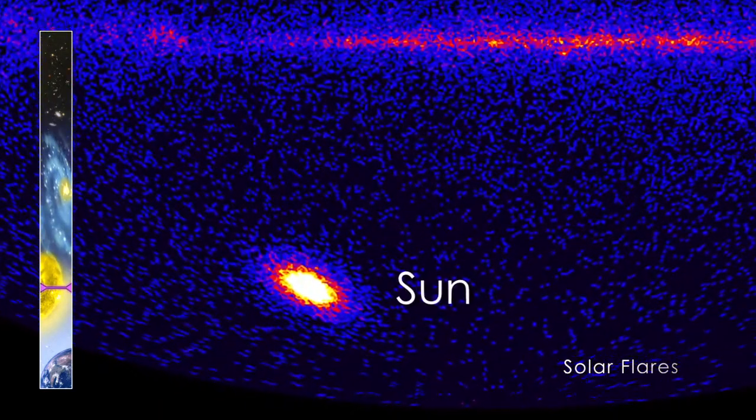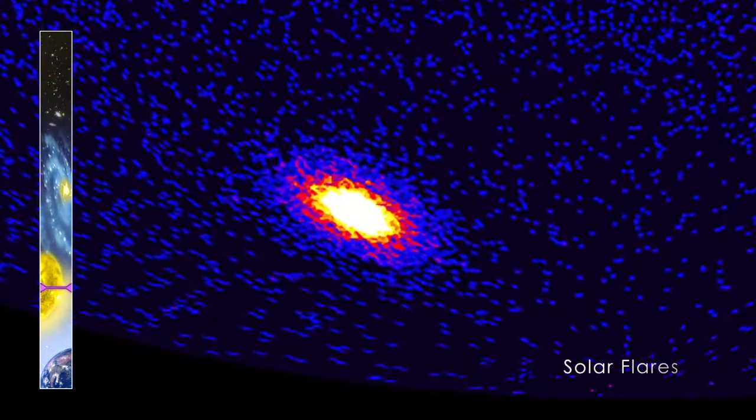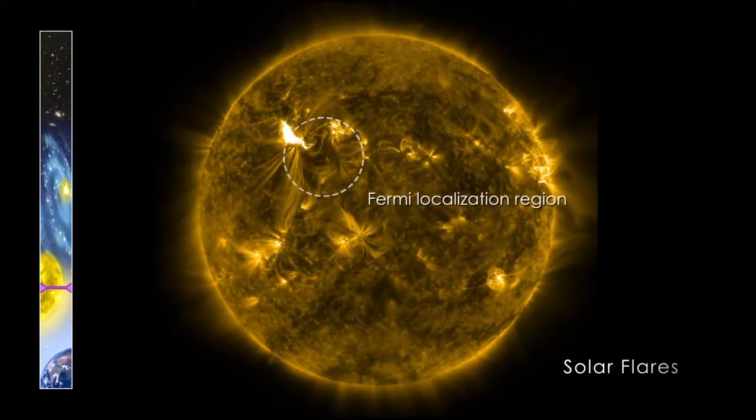In early March 2012, a powerful flare erupted on the Sun. During this event, the LAT detected the highest energy light ever recorded from a solar flare.